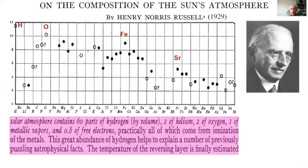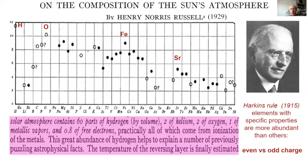Payne's finding was initially rejected by the most prominent American astronomer of the time, Henry Norris Russell — but Russell, who was not an idiot, realized a couple of years later that he was wrong. He made an extensive investigation of the composition of the solar atmosphere, and in that 1929 paper he noted that hydrogen is the most abundant element, and that the predominance of even over odd elements seen in the Earth's crust is also seen in the composition of the Sun.